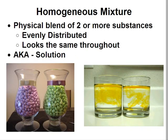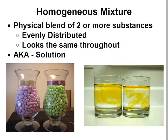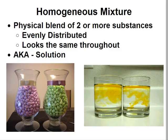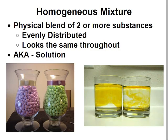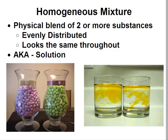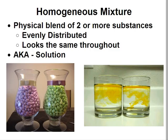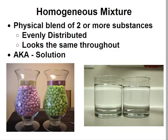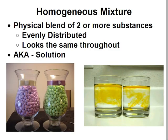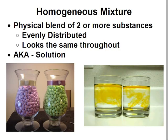Now, a solution is a homogeneous mixture. It is a physical blend of two or more substances where the substances are evenly distributed — it looks the same throughout. The picture to the left has purple jelly beans and green jelly beans, which gives us an idea of what homogeneous means: to appear as just one. To the right, yellow food coloring is being mixed with water. Once the food coloring spreads throughout, the whole cup will appear yellow — it will look like one thing. A homogeneous mixture is a physical blend of two or more substances that looks the same throughout.